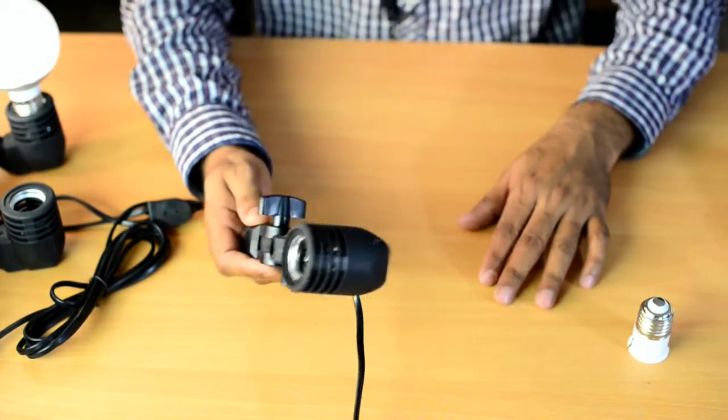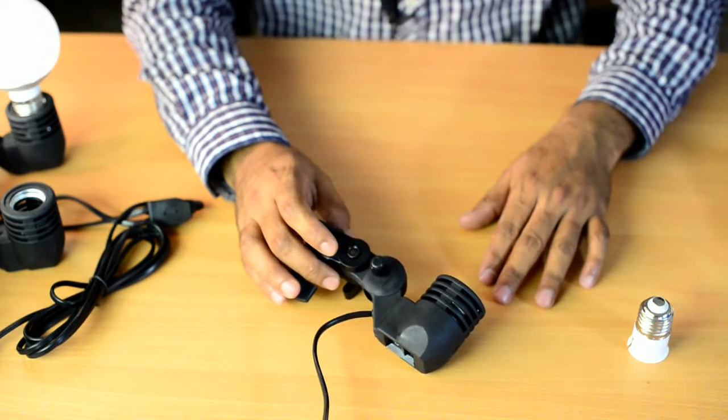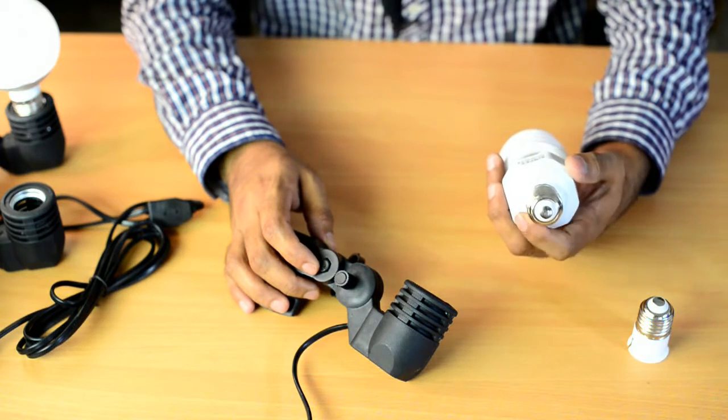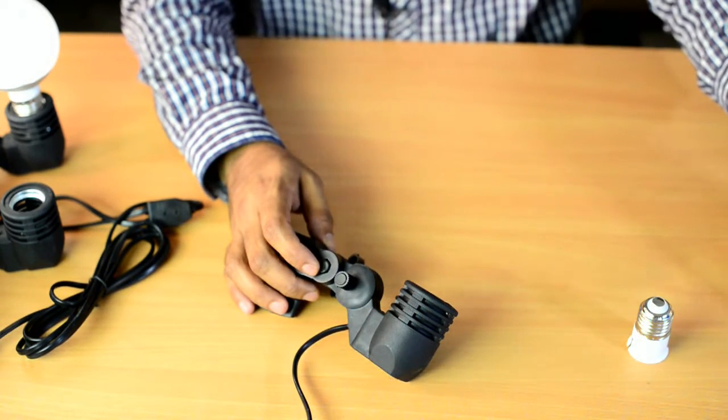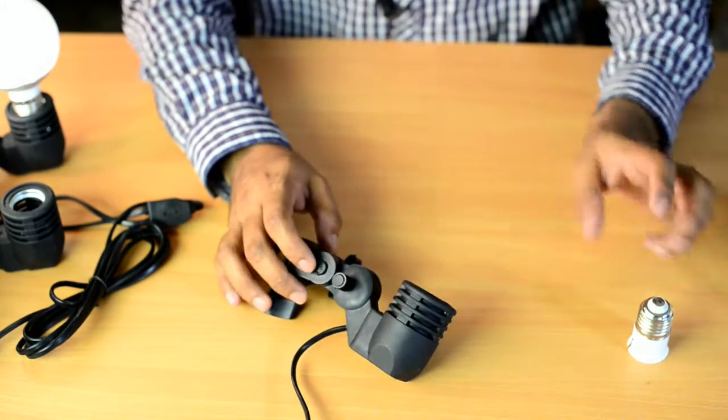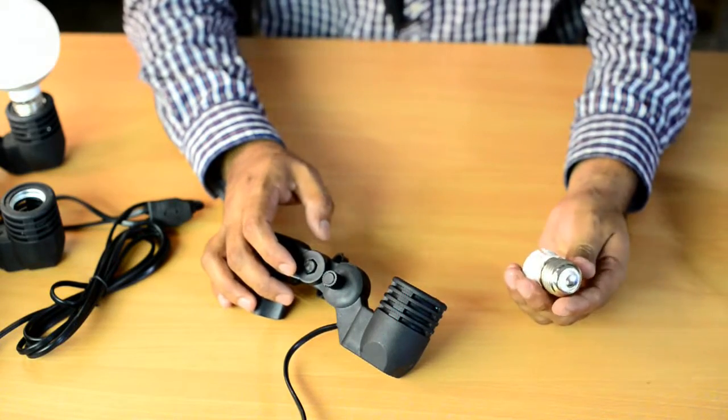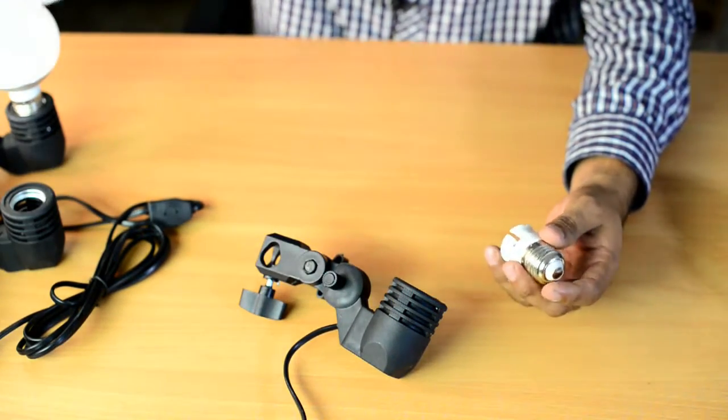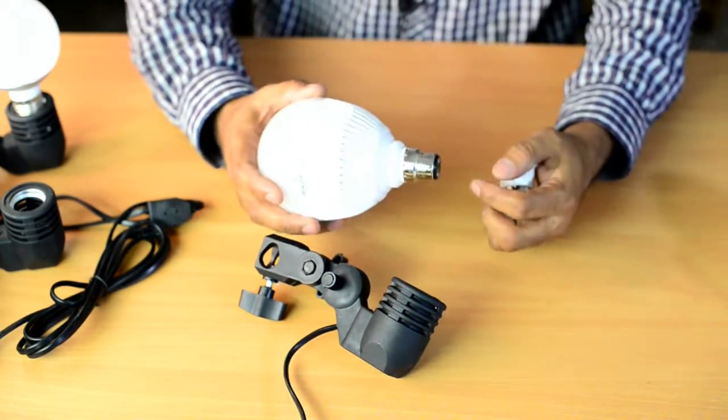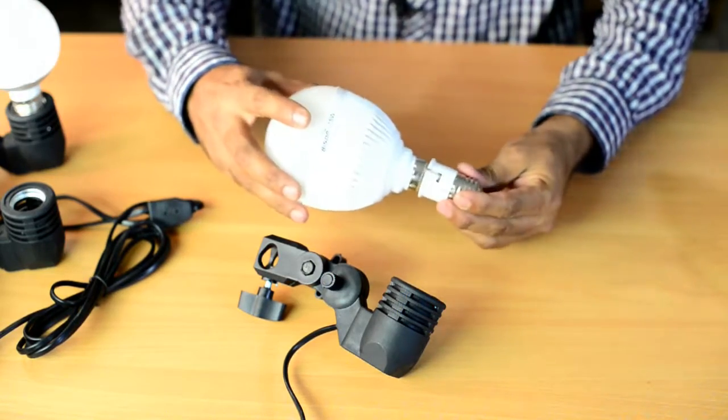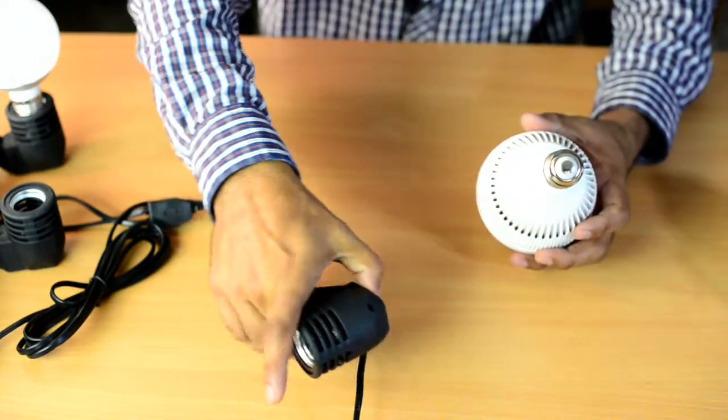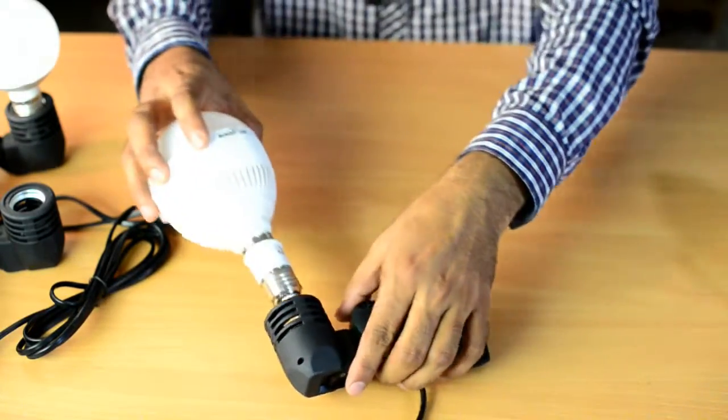You can use this kind of CFL bulb holder to mount or thread CFL into it. If you don't have a screw mount or thread CFL, you can use these converters which enable you to use Indian bulbs with this bracket. This Indian bulb adapter converts into the thread holder.